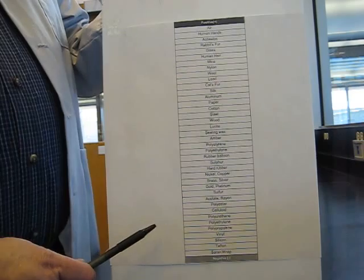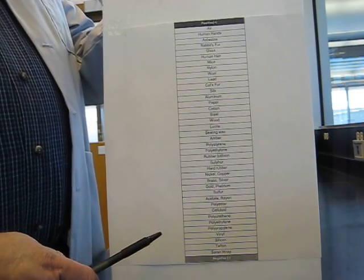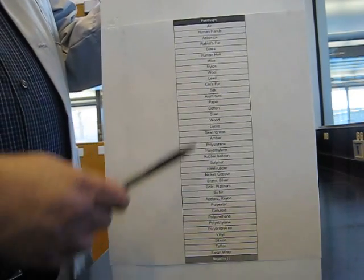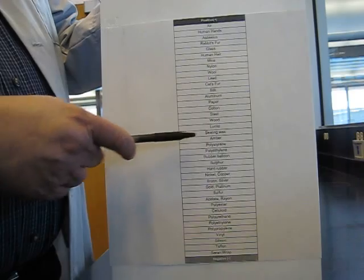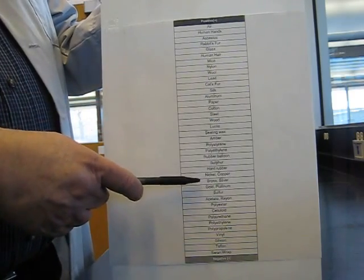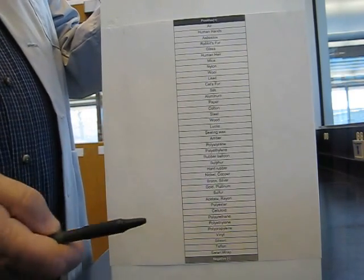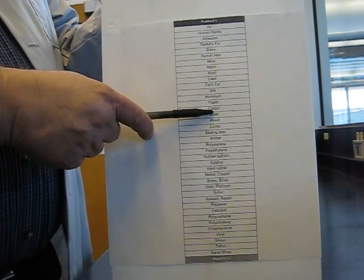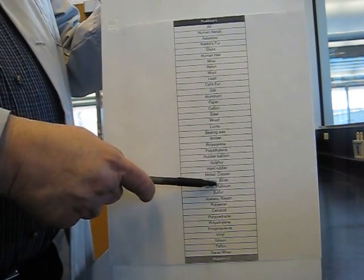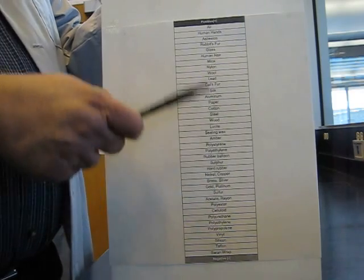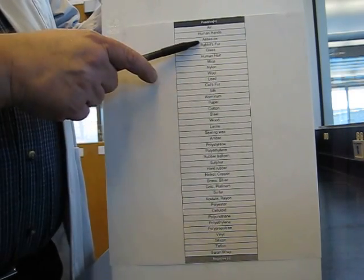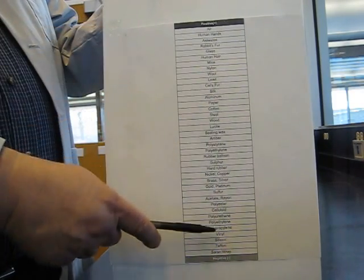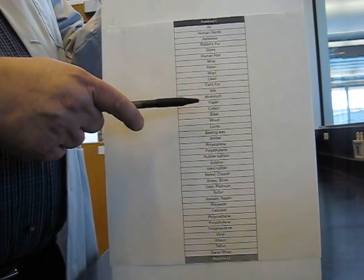This is an example of what's called the triboelectric series. So the way this works is if you can take any two materials from this chart, press them together, pull them apart, measure the charge on each one. The one that's higher in the table is going to be positively charged and the one lower is going to be negatively charged. And then the distance between the two materials, the farther they are apart, the more charge is going to be generated.